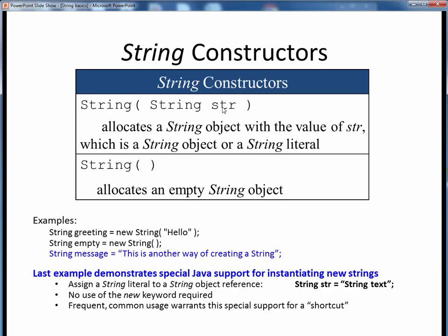We can create a new String object by simply providing the literal text value we want it to have. For example, here we are creating a String object called Greeting, and we are instantiating it, as usual, by using the new keyword, a String constructor, and the text value we want our String object to have, hello in this case.